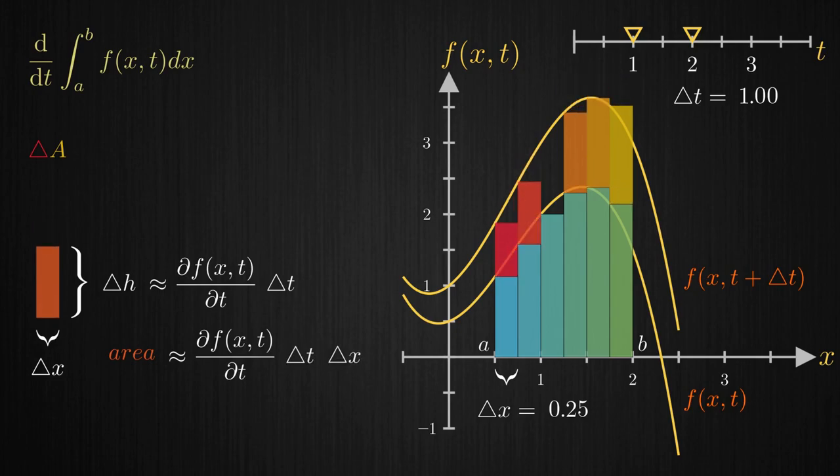Repeating this process with all the rectangles and taking the summation of their areas, we have an approximation to the actual change in area. As Δt is common to all the rectangles, it can be factored out of the summation.